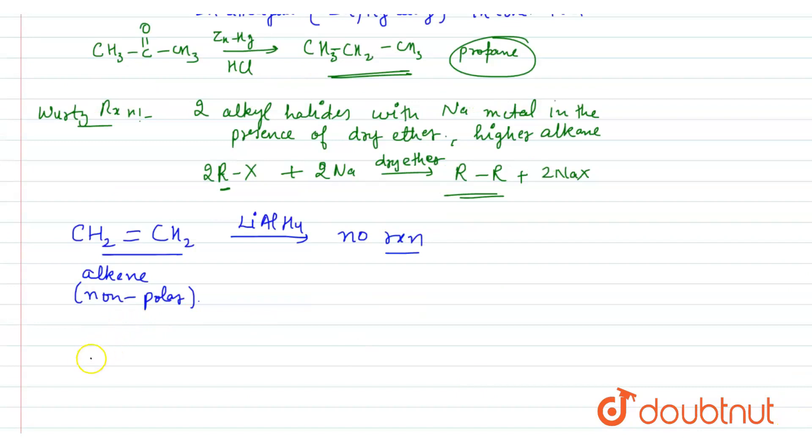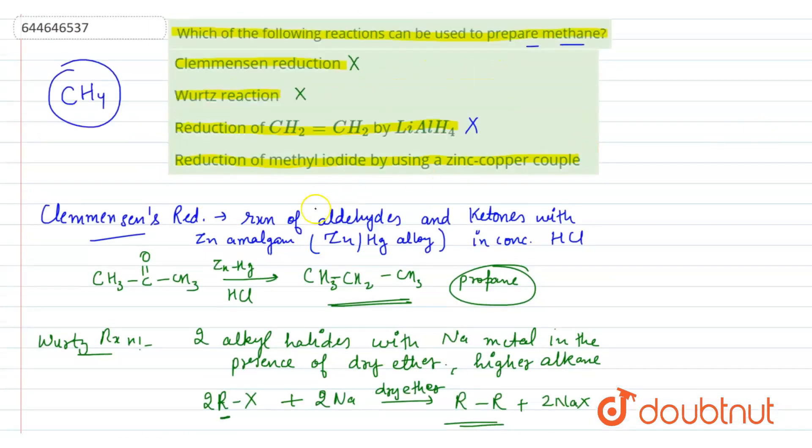For this reaction, if methyl iodide that is CH3I is taken and it is reduced with zinc-copper couple in the presence of alcohol, this hydrogen will be attached with this CH3 and there will be formation of CH4 plus HI is removed. This molecule is methane.